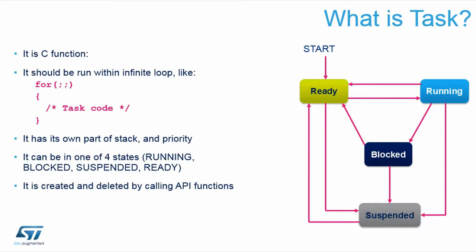You enter the blocked state when waiting for something. For example, if you want to toggle an LED every 200 milliseconds, your function will call LED toggle and then osDelay(200). The task is automatically put into the blocked state for 200 milliseconds, and the scheduler moves it back to ready after that delay elapses. This gives you a mechanism for timing task execution.